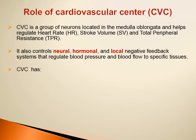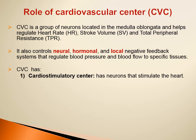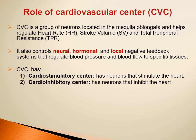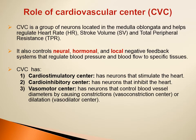The cardiovascular center has different sub-centers. The cardio-stimulatory center has neurons that stimulate the heart. The cardio-inhibitory center has neurons that inhibit the heart. The vasomotor center has neurons that control blood vessel diameters by causing vasoconstriction, and it is divided into a vasoconstriction center and a vasodilator center. If we need vasoconstriction, the vasoconstriction center will be active; if we need vasodilation, the vasodilator center will be activated.